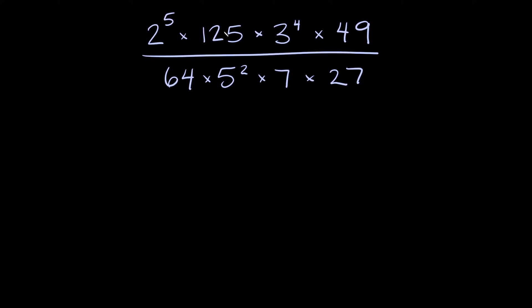Here we have 2 to the 5th times 125 times 3 to the 4th times 49 over 64 times 5 squared times 7 times 27.